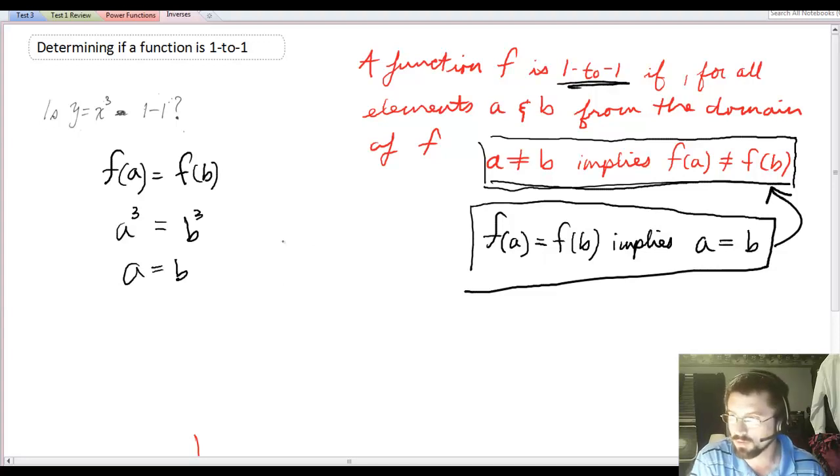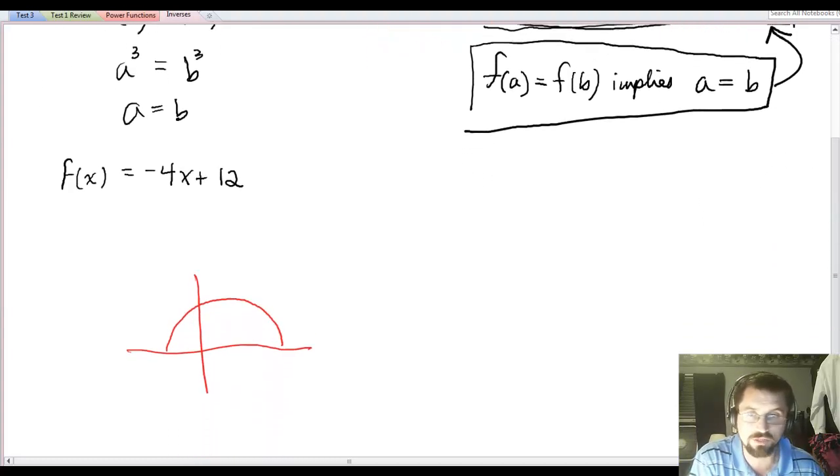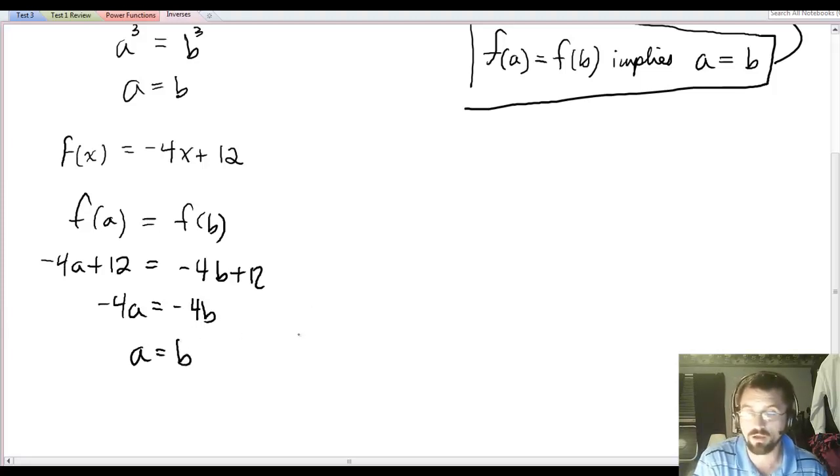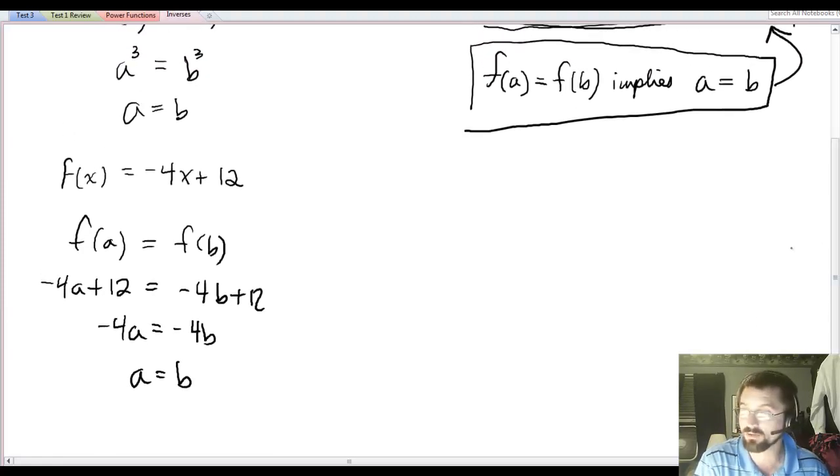A more involved example might be f of x equals negative 4x plus 12. So I want to show that this function is one to one. So what I begin with is I assume that f of a equals f of b. And then I say, well, negative 4 times a plus 12 must equal negative 4 times b plus 12. Therefore, negative 4a equals negative 4b. And that means a equals b when you divide both sides by 4. So that's how you would prove that two functions are one to one. If you suspect that two functions are not one to one, then it's up to you to find a counter example like I did with my y equals x to the fourth.